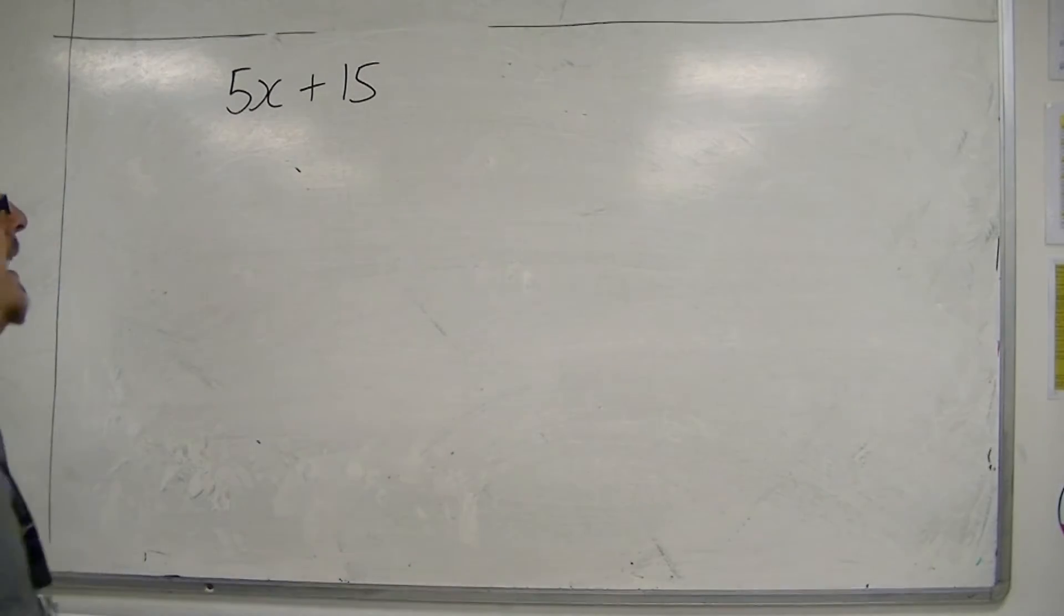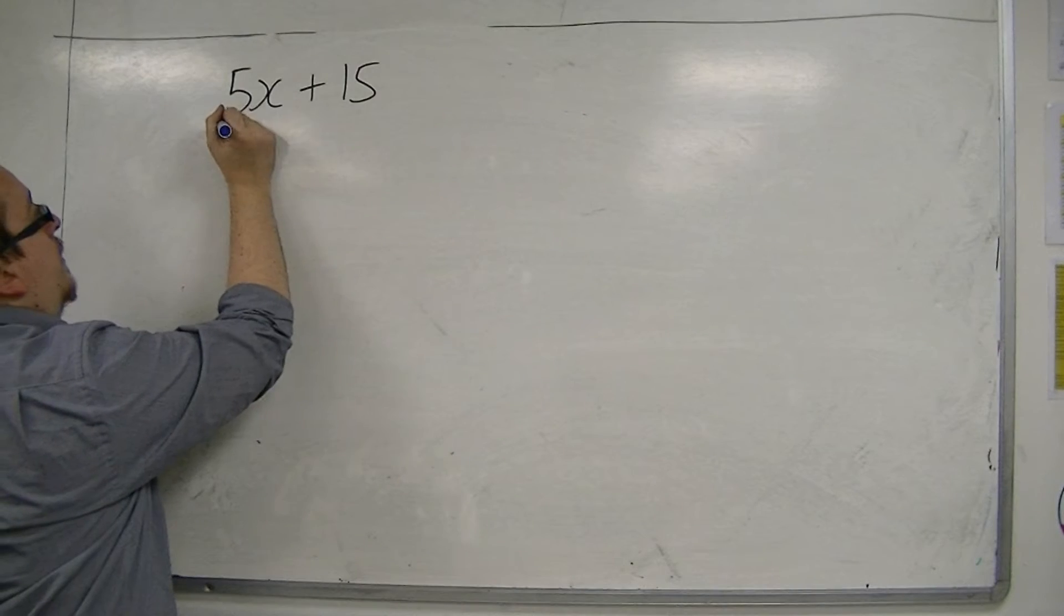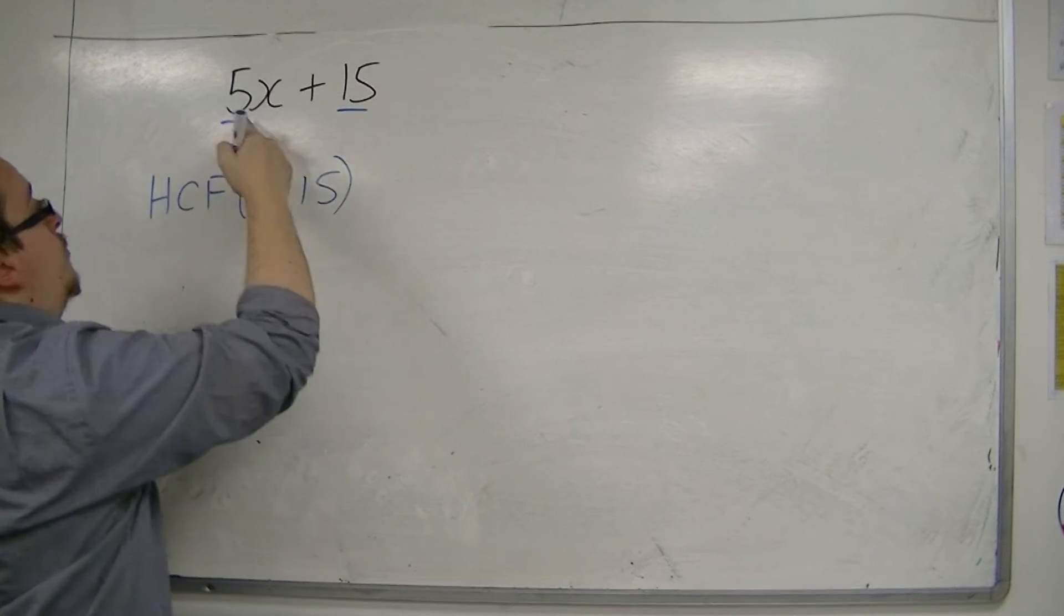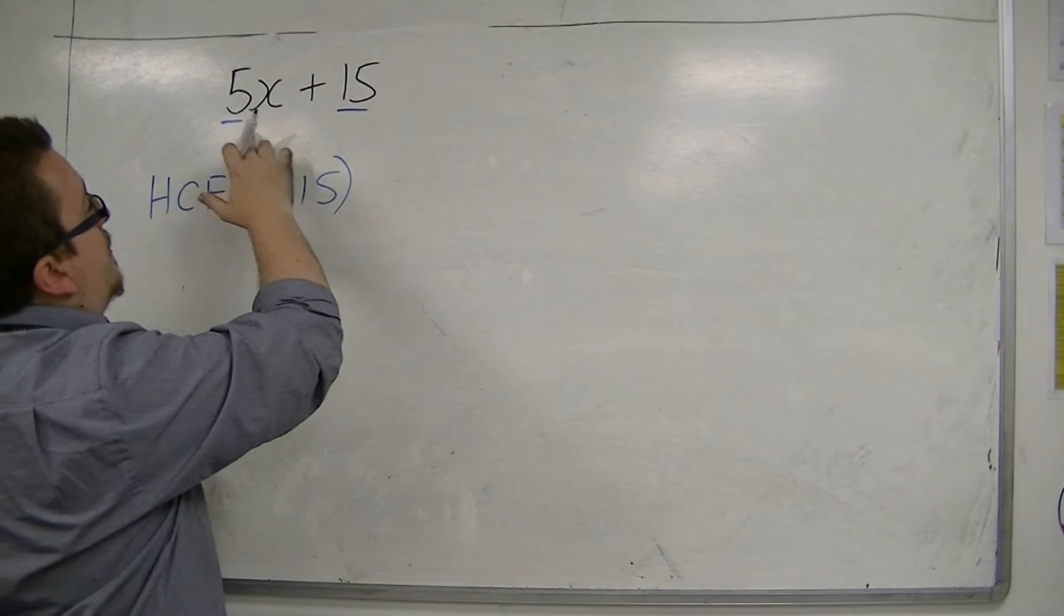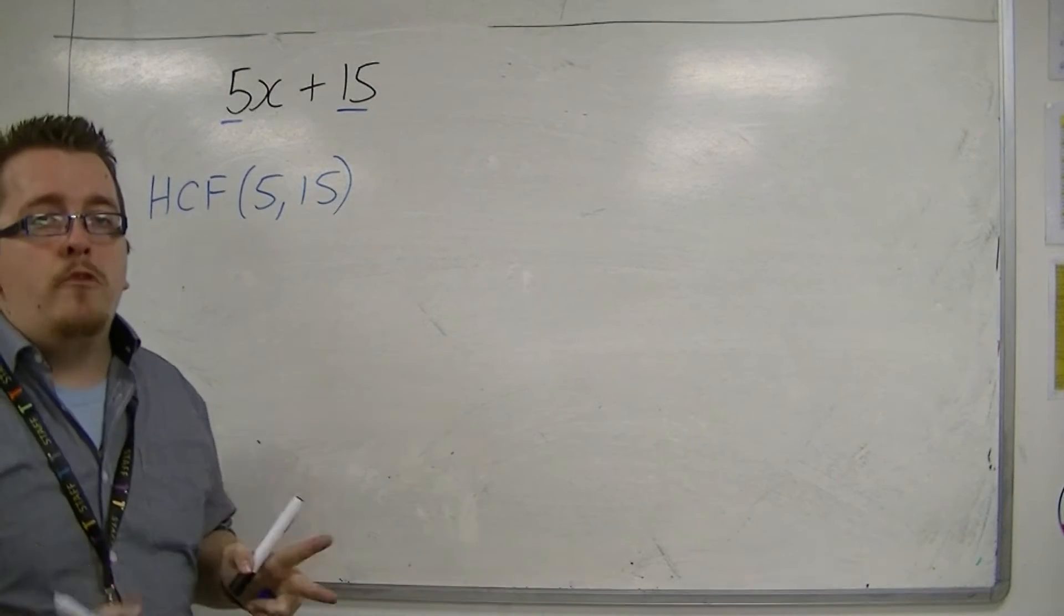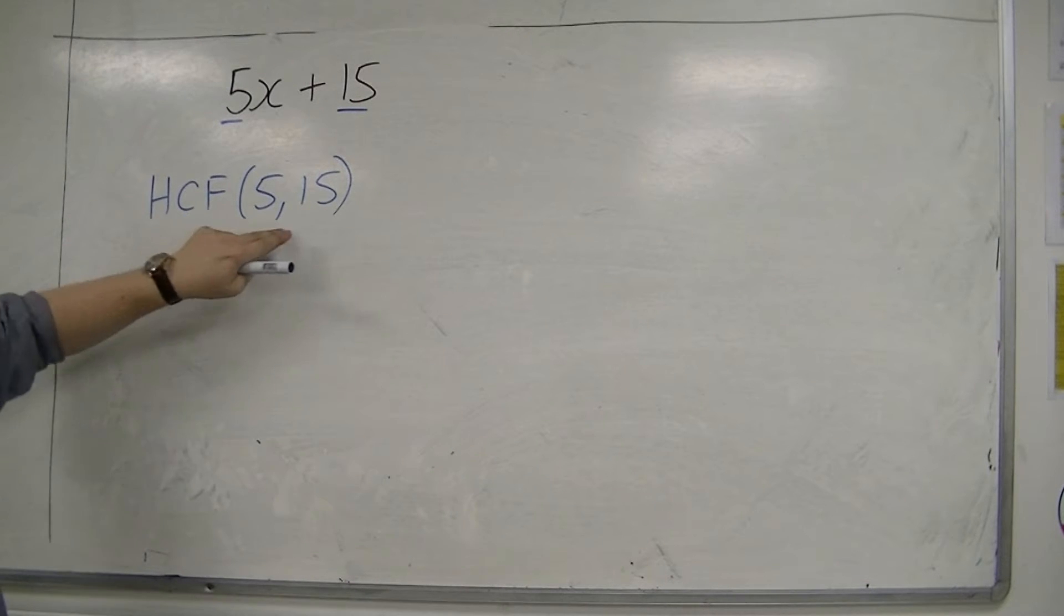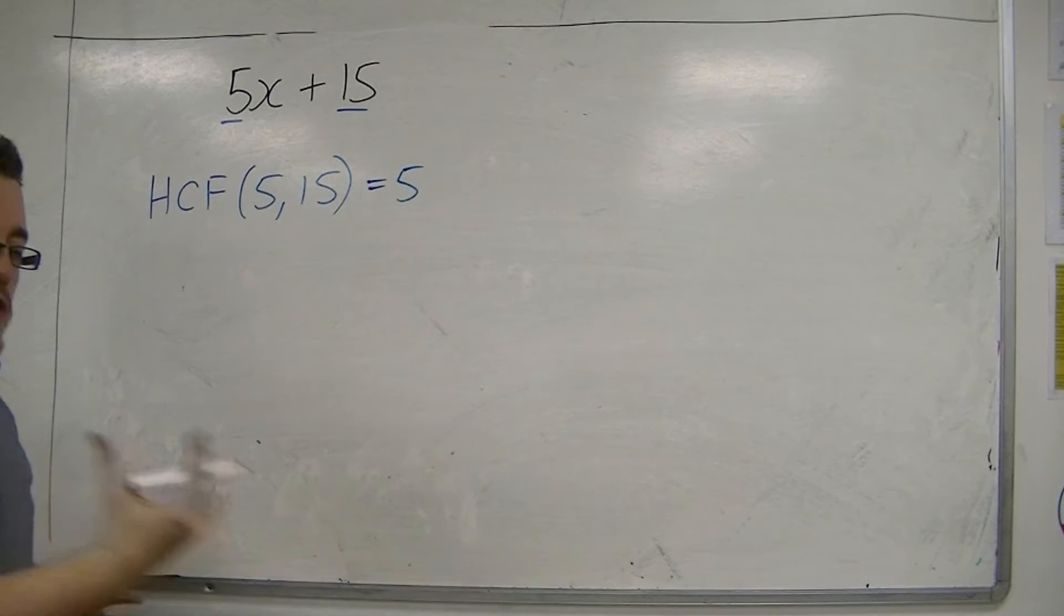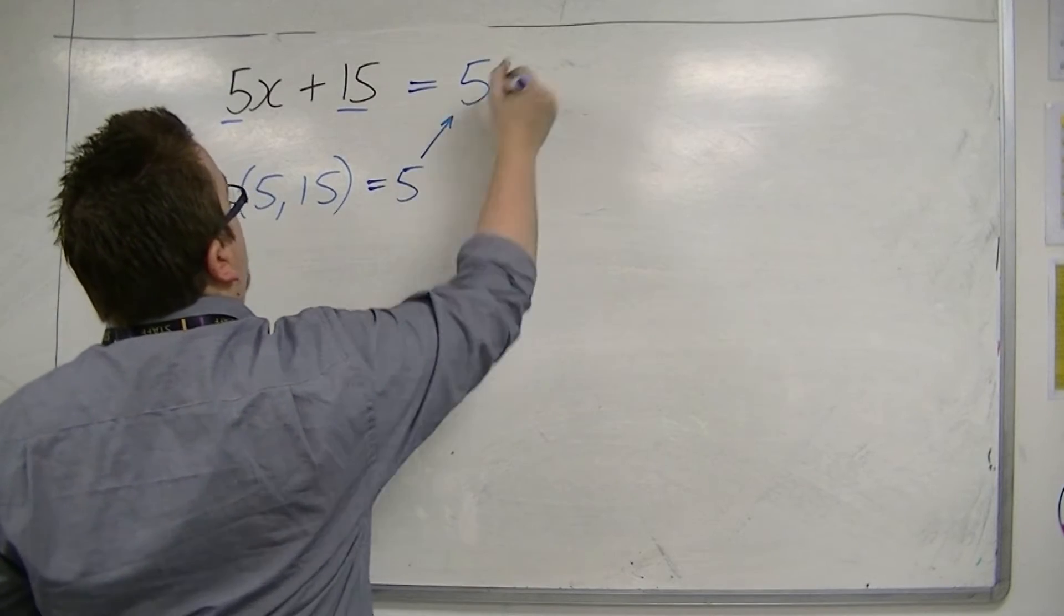The key concept is that what you want to do is you want to look for the highest common factor of the two terms that you have in front of you. So, the highest common factor of the 5 and the 15. We're just going to look at the numbers. The fact that this has an x doesn't really worry us at the moment. The highest common factor of 5 and 15, well, that would just be 5. So, we want the largest number that goes into both terms, and that's 5.